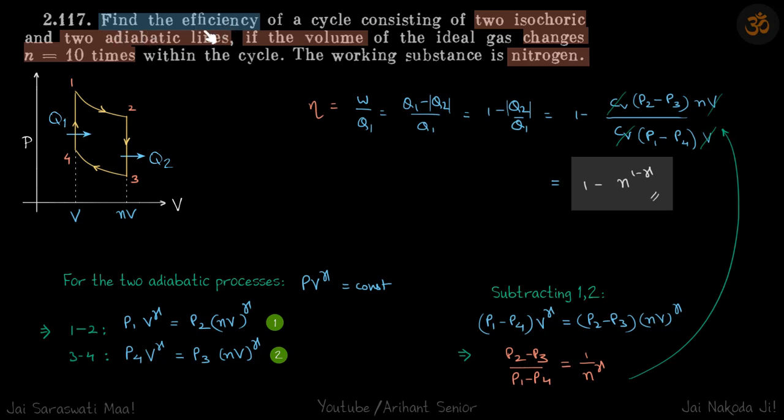Find the efficiency of a cycle which has two isochoric lines and two adiabatic lines, where the volume during the cycle changes n times.